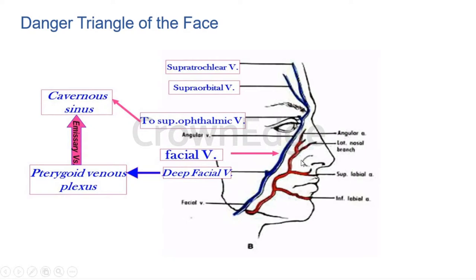The infection can spread from right to left cavernous sinus due to their connection, building pressure and causing damage to multiple structures. Note that the dangerous layer of the scalp is different from the dangerous triangle of the face. Here we are talking about veins carrying infection to the cavernous sinus, not arteries, though veins and arteries run together. With this, we have reached the end of the topic covering the nose, external nose, nasal cavity, and paranasal sinuses.